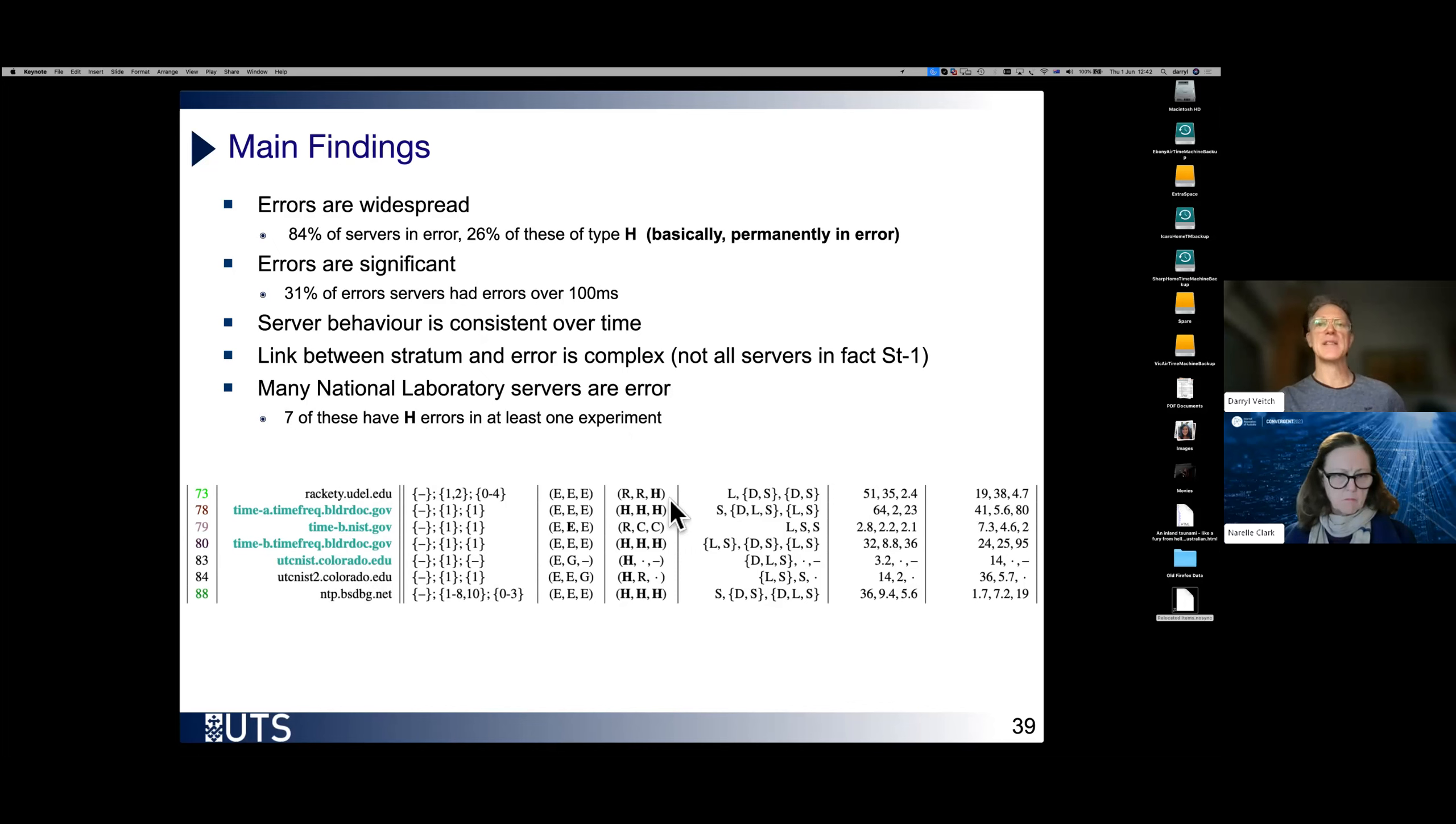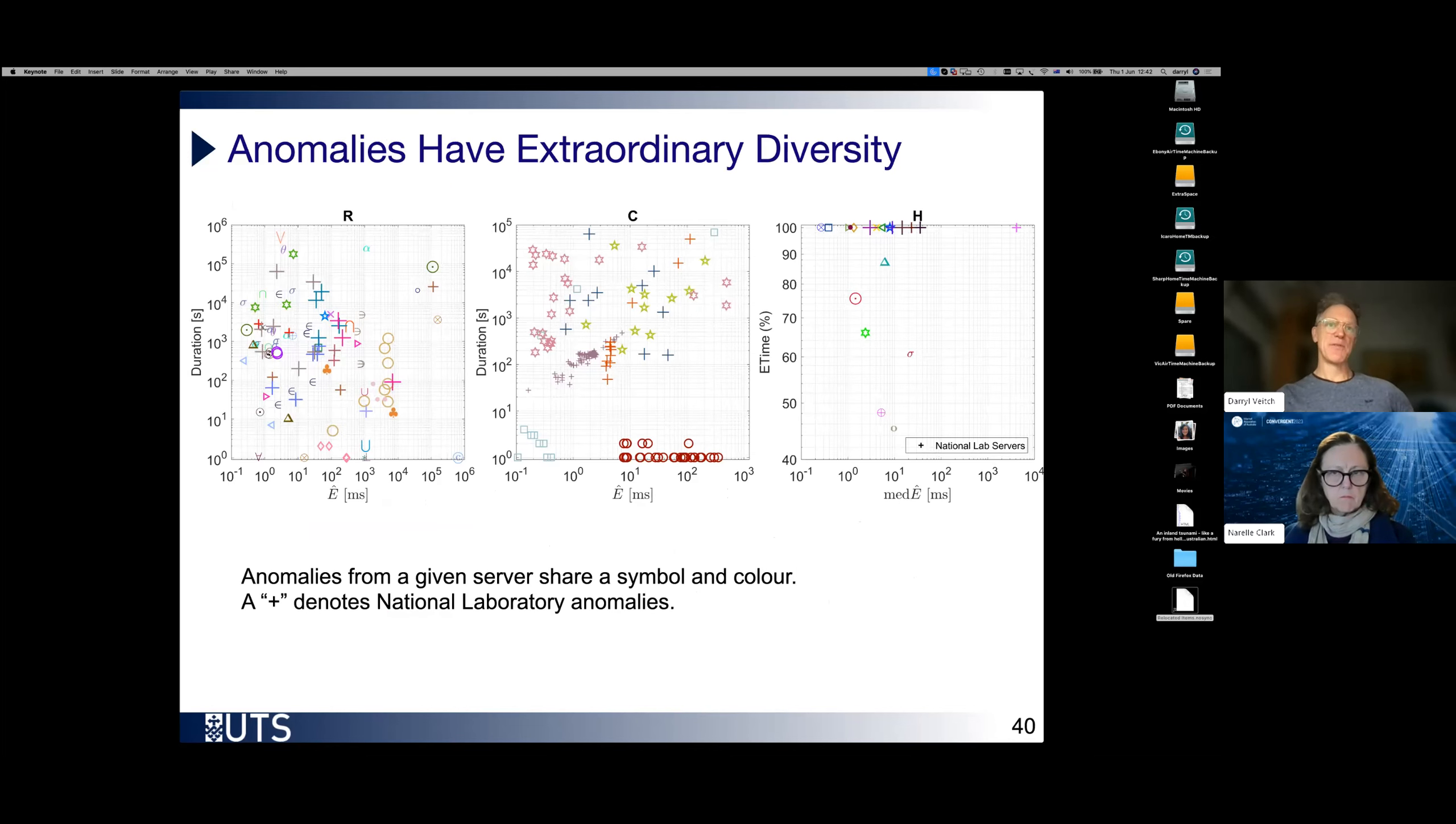And this is just a small section from one of the tables in the paper where these coloured servers here are from NIST. It's the standards body in the US. And many of their servers in each of the experiments one, two, and three were showing these high prevalence errors. The anomalies we found had this incredible diversity. If we could just focus on the left-hand plot here. These are the rare servers. I just want to draw attention to the orders of magnitude here. This goes from 10 to the minus one milliseconds to 10 to the six. That's the amplitude of the error. And the durations from 10 to the zero to 10 to the six seconds.